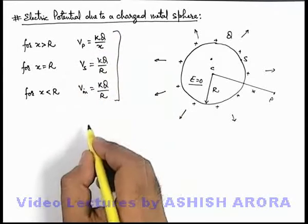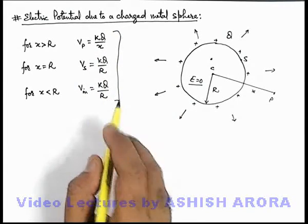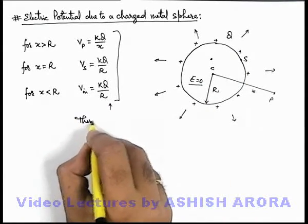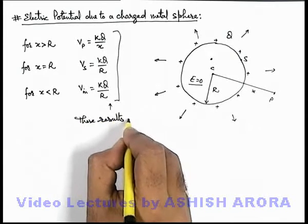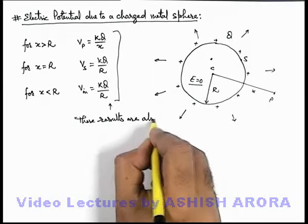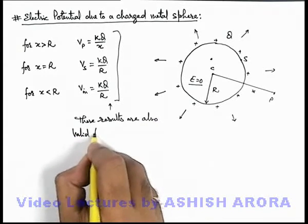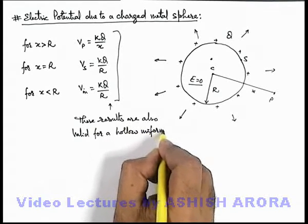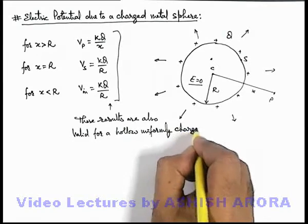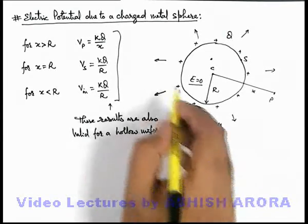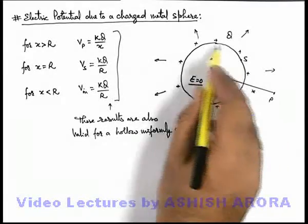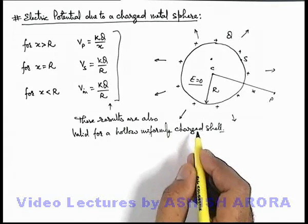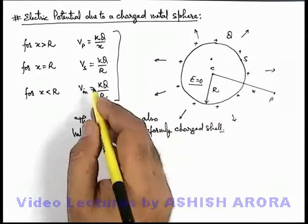So these are the results for electric potential for a solid uniformly charged metal sphere. We can also say that these results are also valid for a hollow uniformly charged shell, because the electric field configuration exists only due to the charges on the surface. If there is a hollow uniformly charged shell, the electric field configuration will be similar, so the potential results will remain the same.